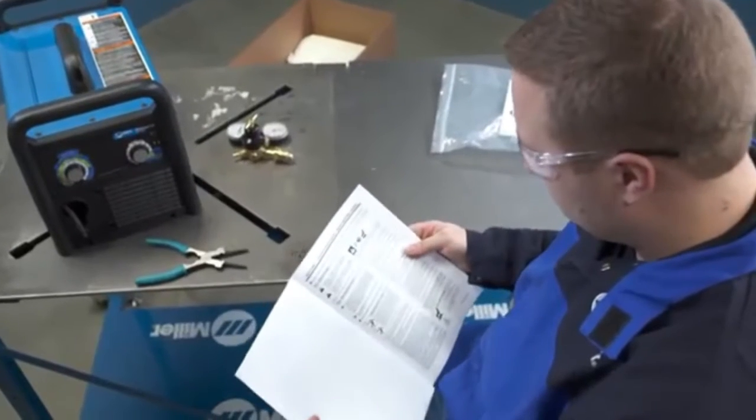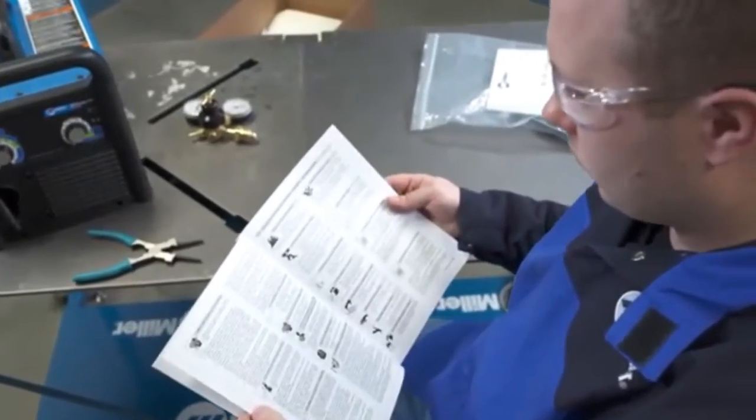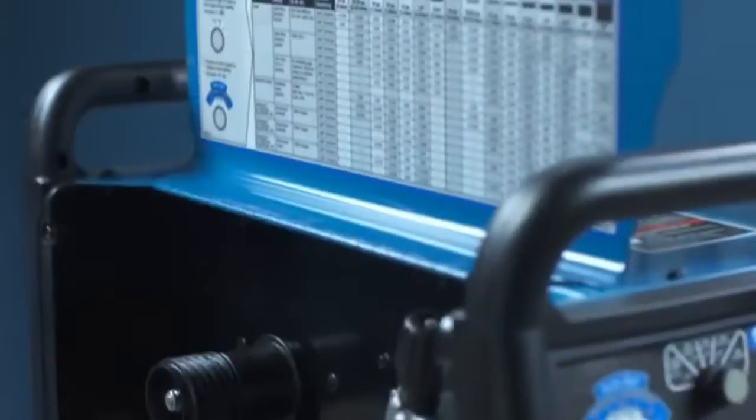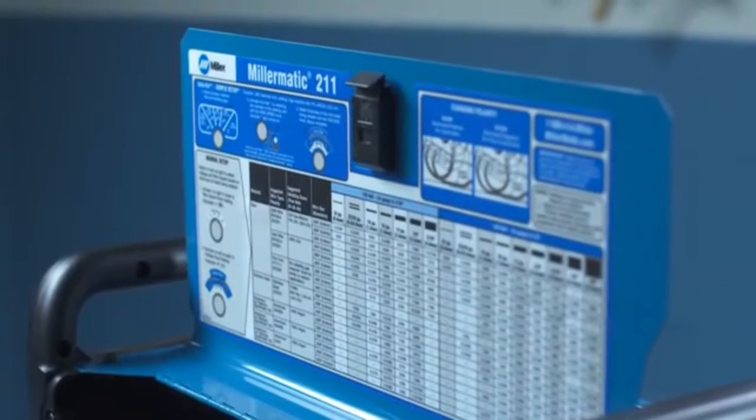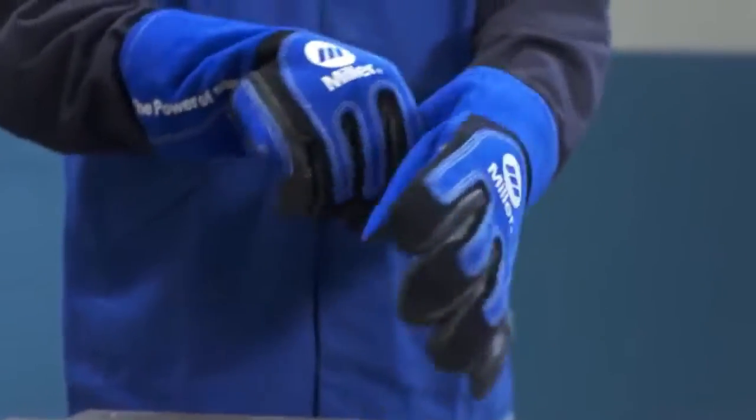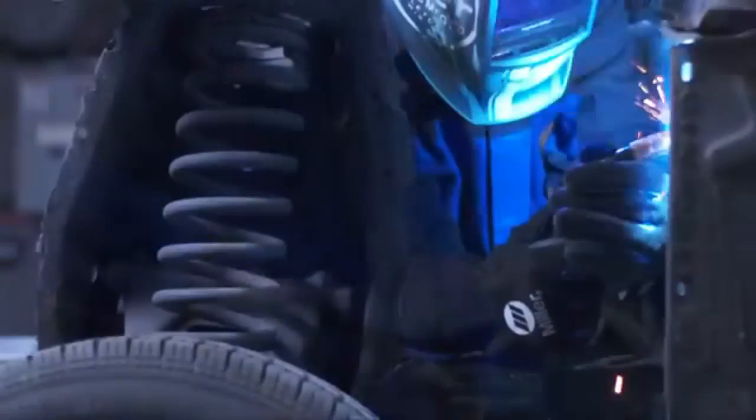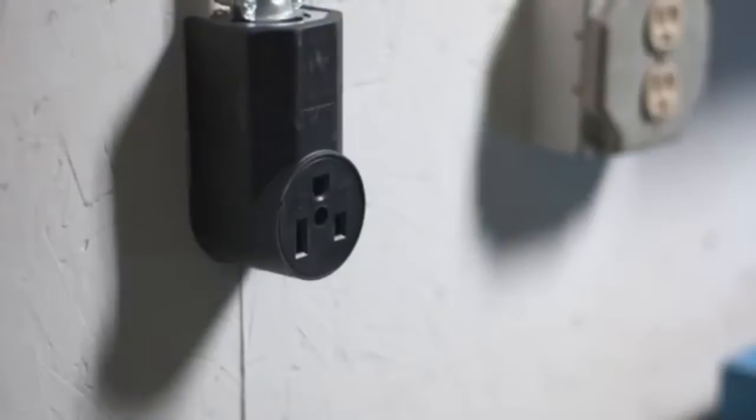Before proceeding, take time to review the safety section of the owner's manual that came with your Millermatic. For easy reference, you'll find a parameter chart and basic setup tips inside the door. A helmet with at least a shade 10 lens is recommended. Before setup, make sure your machine is unplugged.